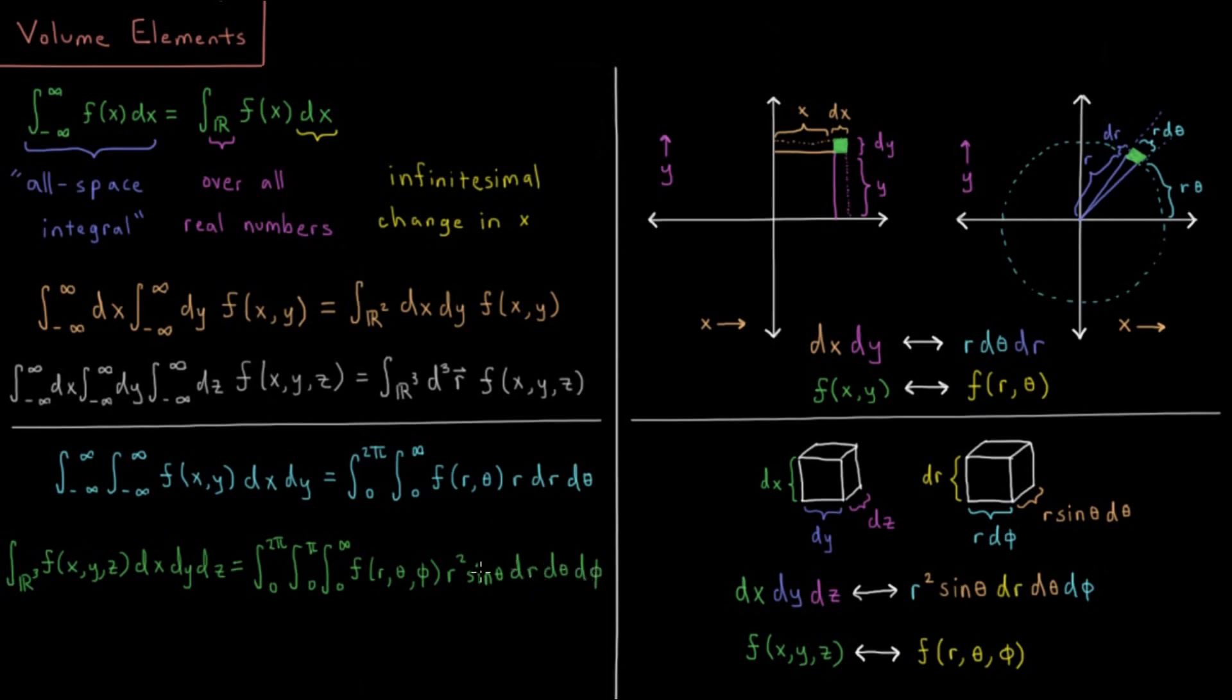Now our task is to explain just why the heck we have these extra terms popping up in polar and spherical coordinates for these volume elements.